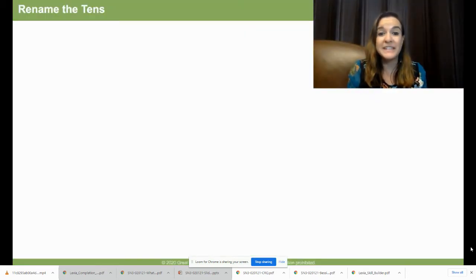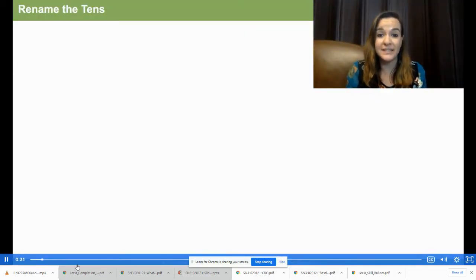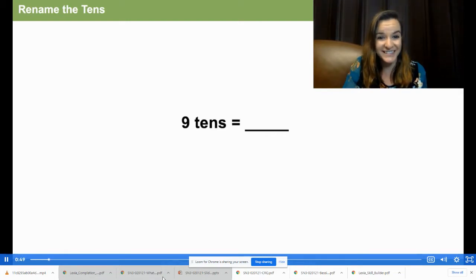We're going to begin today with a fluency activity to prepare us for our lesson. Here's how it's going to work. I'm going to give you a number of tens on the screen. You are going to write on your whiteboard that number in standard form. So if I say 9 tens, on your board you will write 90. Ready? Let's try another one. 10 tens. 100.